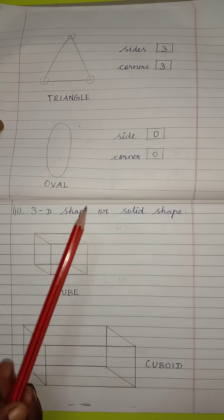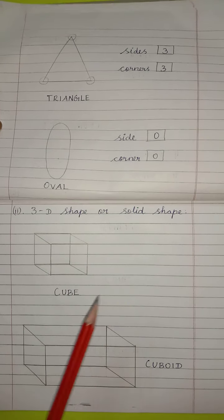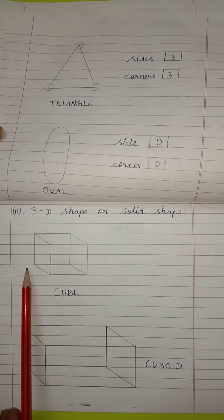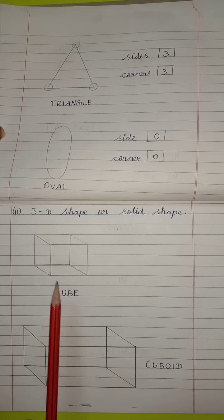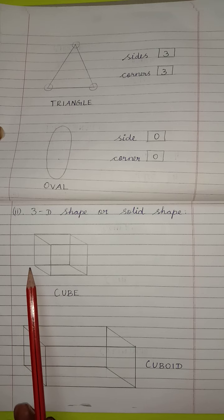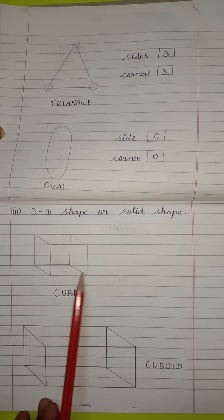3D shape or solid shape. First, see children, what shape it is? Cube. What it is? Cube. Using a square, we draw this cube.